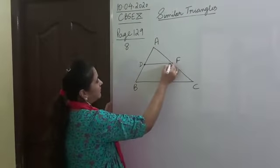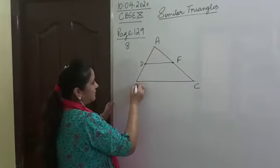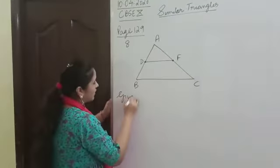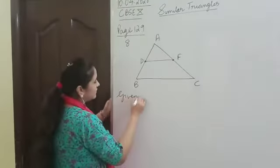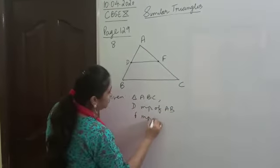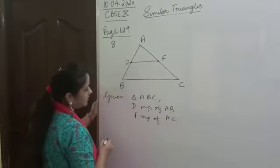What does it mean? It means D is the midpoint of AB and F is the midpoint of AC. So, that is given to you. What are you given? You are given a triangle ABC in which D is the midpoint of AB and F is the midpoint of AC.